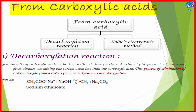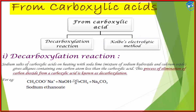The third method is from carboxylic acids. There are two approaches: one gives one carbon less, which is decarboxylation, and the other is Kolbe's electrolysis where we again get a dimer. For decarboxylation, we take the sodium salt of the carboxylic acid and heat it with soda lime — a mixture of sodium hydroxide and calcium oxide — at high temperature. CO2 is released and we get an alkane with one less carbon atom.